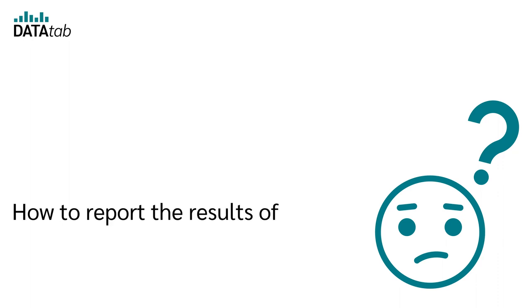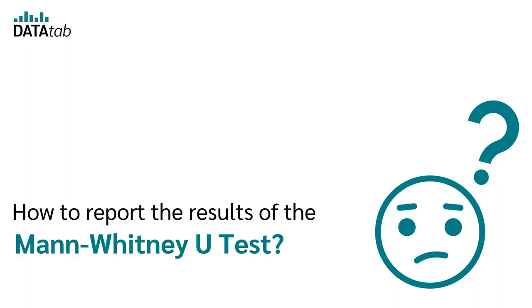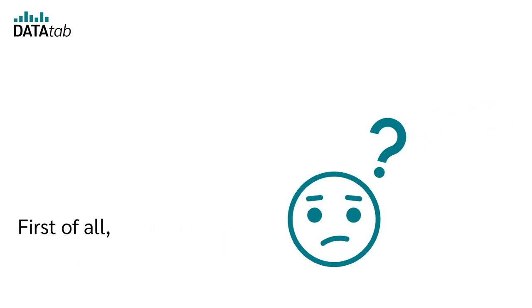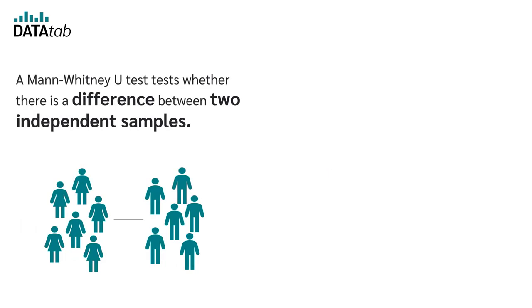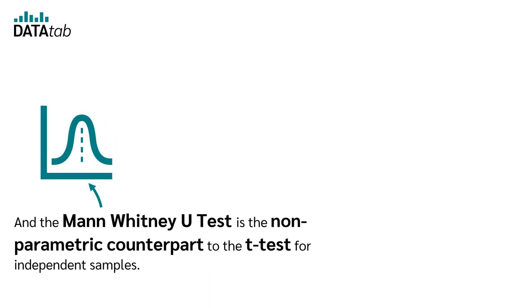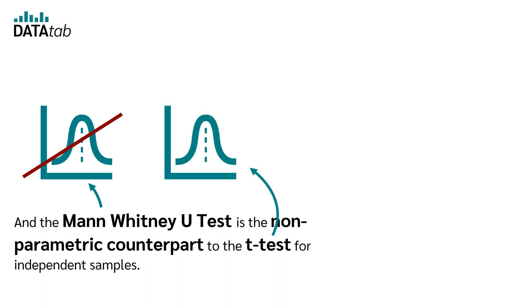How to report the results of the Mann-Whitney-U test adhering to APA style guidelines. A Mann-Whitney-U test tests whether there is a difference between two independent samples, and it is the non-parametric counterpart to the t-test for independent samples.